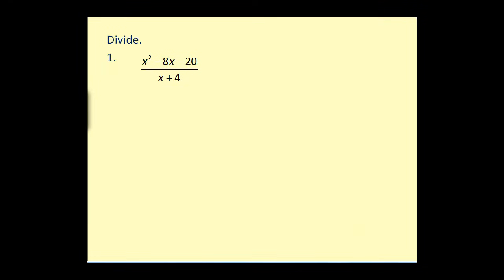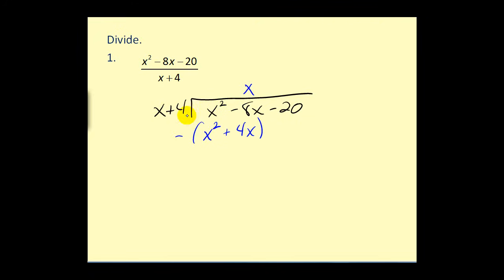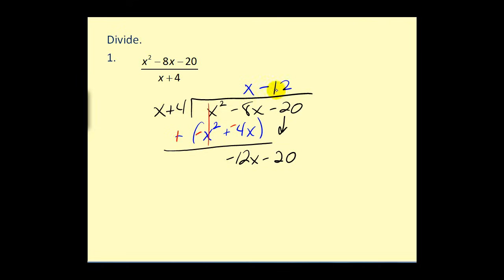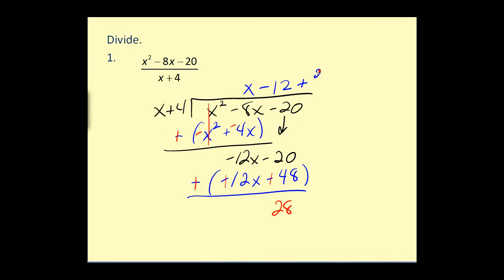Let's try another one. Step 1: set it up as a long division problem. We ask ourselves, what times the leading term of the divisor would equal the leading term of the dividend? What times x equals x squared? That would be x. Multiplying by the divisor, then subtracting by adding the opposite — the result is 0 for the first term and negative 12x. Bring down the next term, and ask: what times x equals negative 12x? That's negative 12. Multiplying by the divisor: negative 12 times x and negative 12 times 4. Subtracting by adding opposites, the result is positive 28. So we write that as plus 28 over the divisor of x plus 4. Here's our quotient.